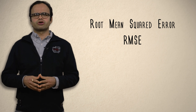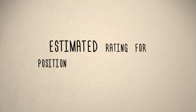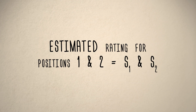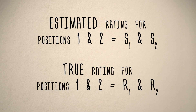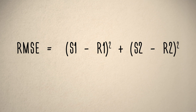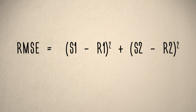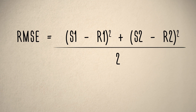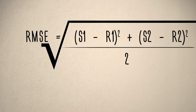For example, suppose an algorithm predicts ratings for positions 1 and 2 as S1 and S2, but the true ratings were R1 and R2. Then the RMSE is computed as follows: first, compute the summation of the squared difference between S1 and R1 as well as S2 and R2; divide this by 2; and then take the square root of it. Now we are ready to consider different recommendation algorithms on this dataset.